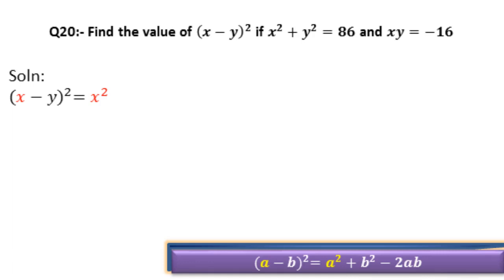Now we write a² so x² is written, plus b² which is y², minus 2ab which is 2xy. So (x - y)² = x² + y² - 2xy.